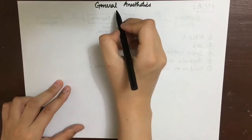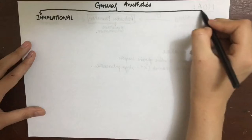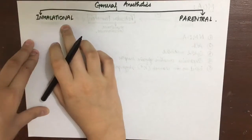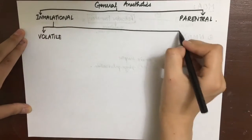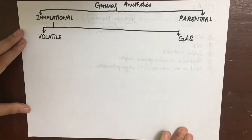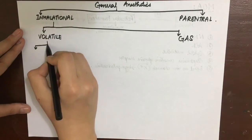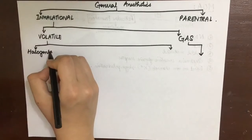Now let's do the classification of general anesthetics. Depending upon the mode of administration, they are divided into inhalational and parenteral general anesthetics. We will do the inhalational general anesthetics in this video and in the next one, we will do the parenteral. The inhalational general anesthetics are further divided into volatile anesthetics and the gases. The volatile anesthetics are then further divided into halogenated and non-halogenated compounds.